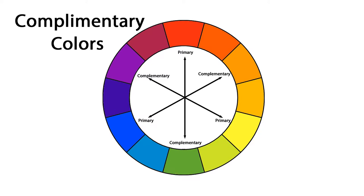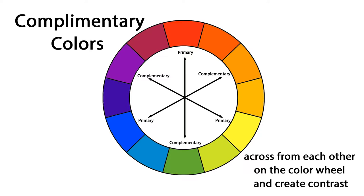Colors across from each other on the color wheel are considered complementary. Complementary colors create high contrast. Colors also have a temperature.